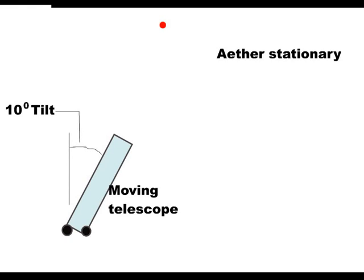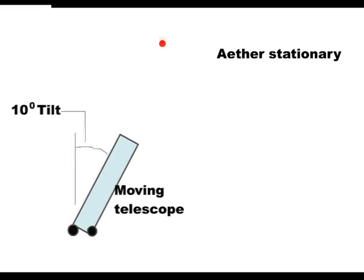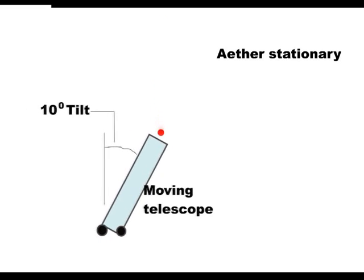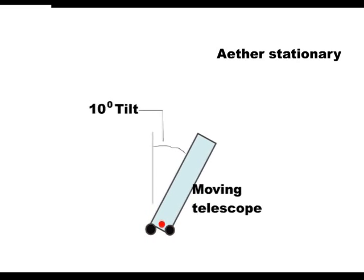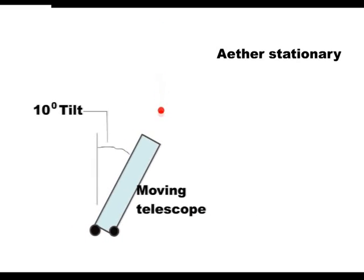However, if the telescope is tipped further, say 10 degrees, then the starlight will then be visible again in the eyepiece. It has to be tipped further because the light is now slower when in the telescope.